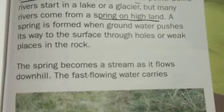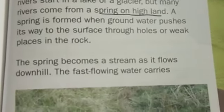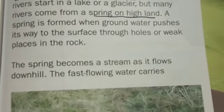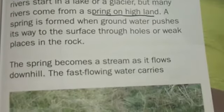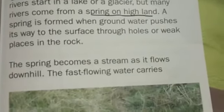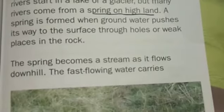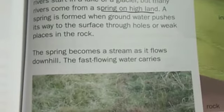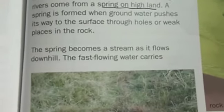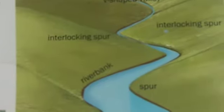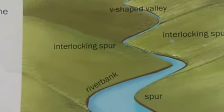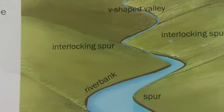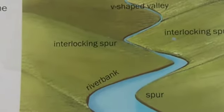The upper course of a river: The place where a river starts is called its source. Our journey begins at this point. Some rivers start in a lake or glacier, but many rivers come from a spring on high land. A spring is formed when groundwater pushes its way to the surface through holes or weak places in the rock. The upper course of a river starts from the source and then you can see its stream and V-shaped valley, and how it comes towards the channel.